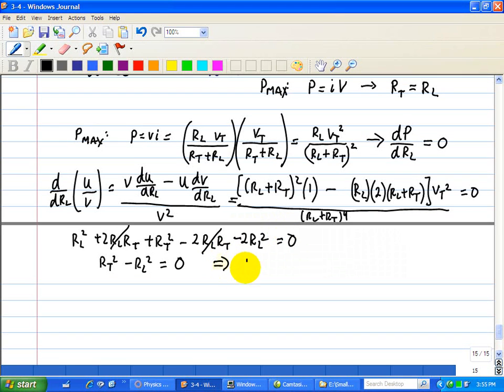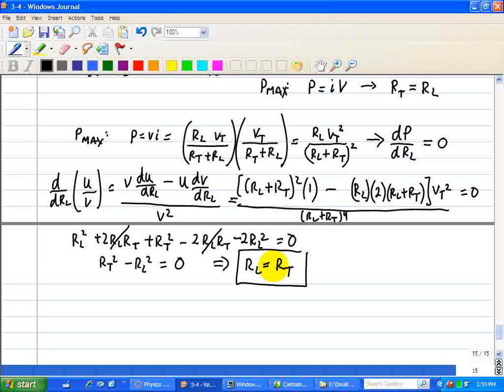That implies that RL is equal to RT, where we take the positive, since we only have positive resistance. So RL is equal to RT, and again, what this does, when RL is equal to RT, we maximize the power delivered to the load.